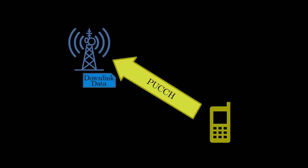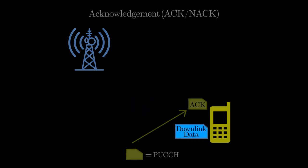PUCCH is a signal transmitted by UE to the base station to convey information such as acknowledgement about the received packet in downlink.